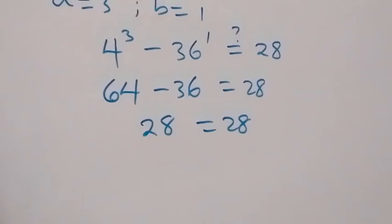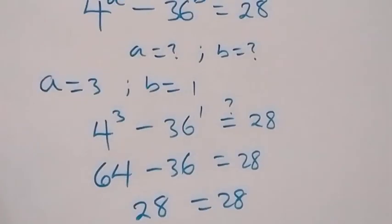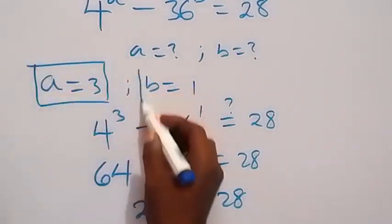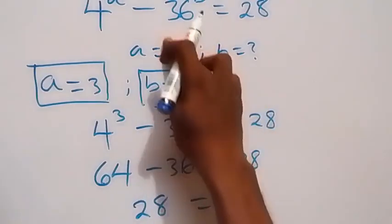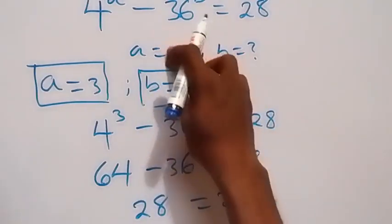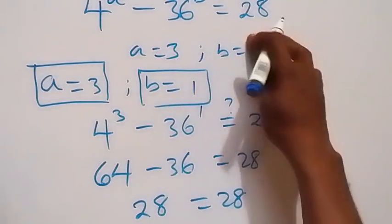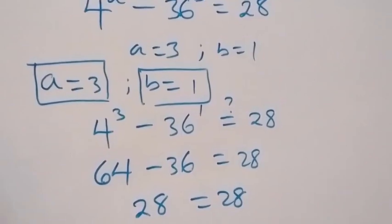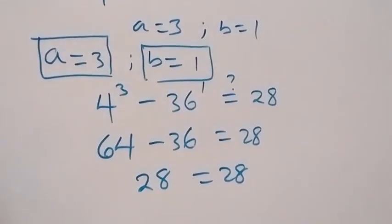So a equals 3 and b equals 1 satisfies this given problem. We have come to the end of the class. Thank you for watching — don't forget to subscribe for more exciting videos, turn the notification bell on, share this video, give a thumbs up, and put your comments in the comment section. See you next class, bye for now.